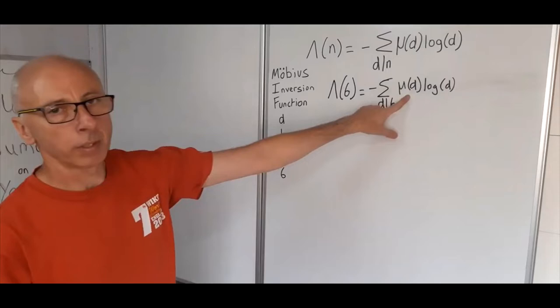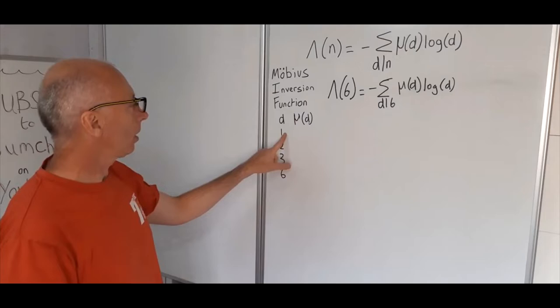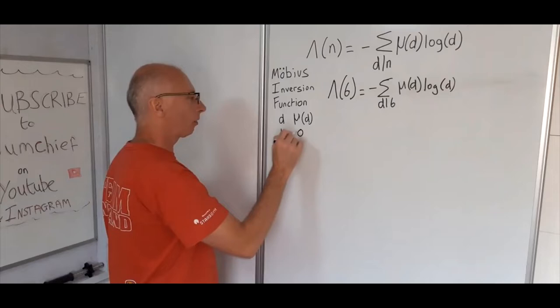Now we need the mu, the Möbius function. For mu of d: 1 takes the value 0 because there are no prime factors of 1.